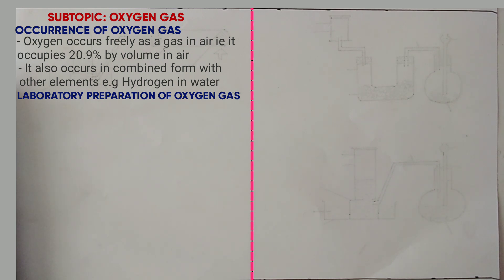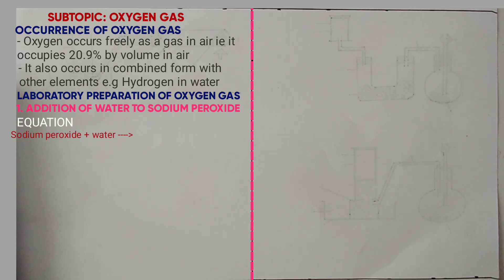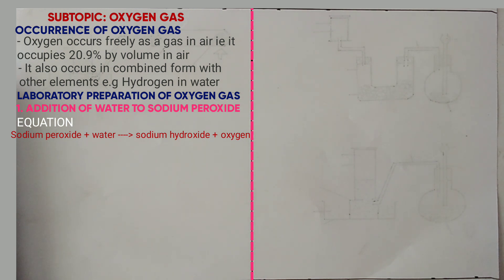First, we will start looking at the preparation of oxygen gas using sodium peroxide and water. The equation is: sodium peroxide plus water → sodium hydroxide plus oxygen gas. Usually, water is added into sodium peroxide.